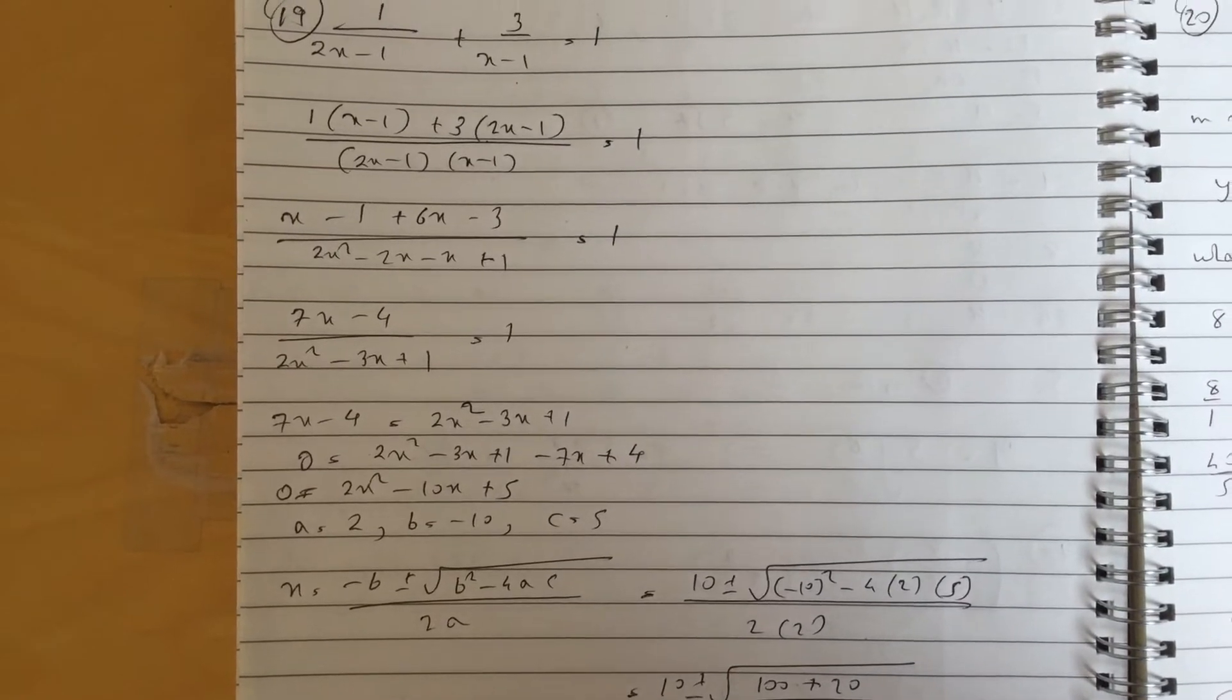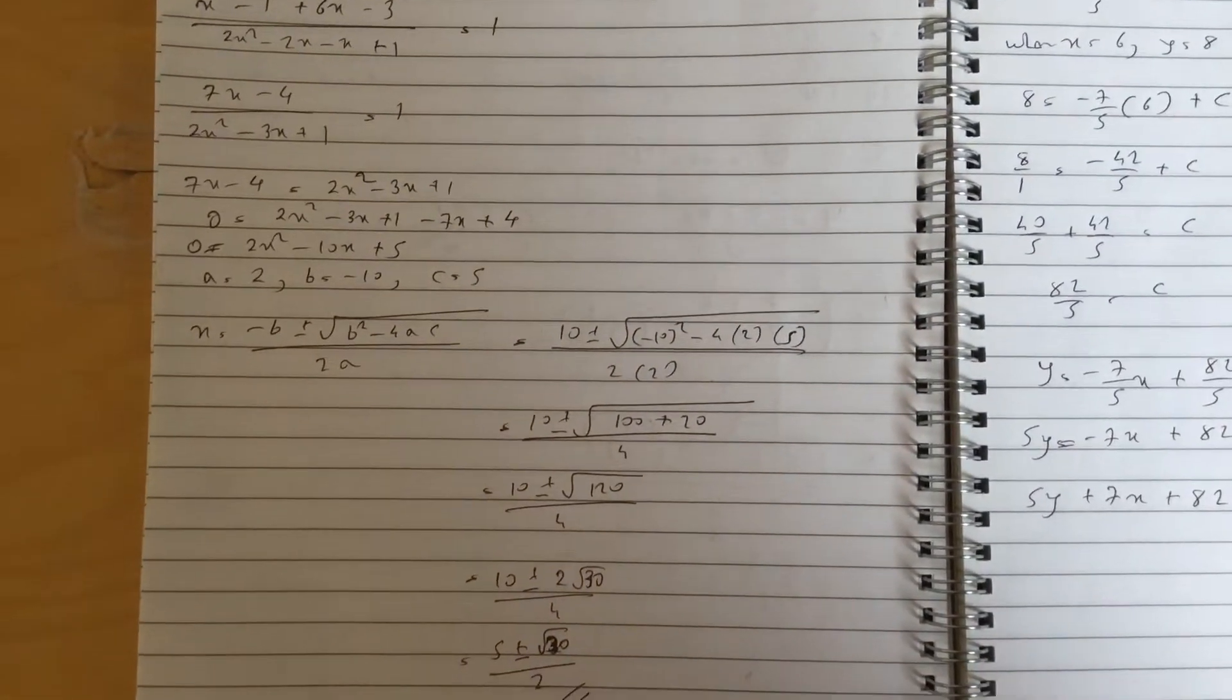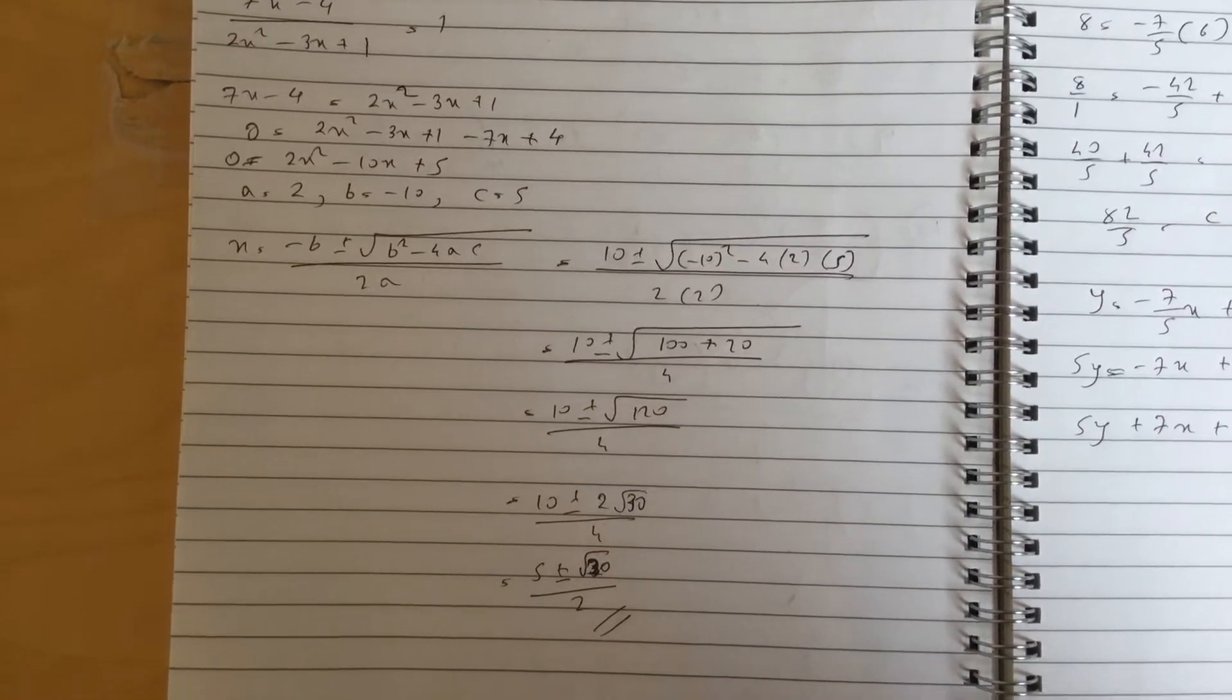I just used quite simply the quadratic formula, and I simplified it very simply because remember it's a non-calculator test. You get 5 plus or minus root 30 over 2.